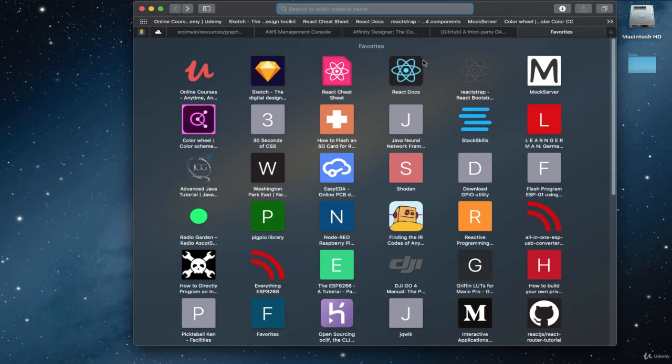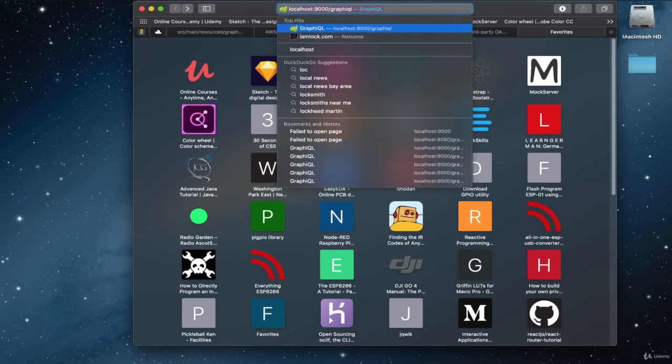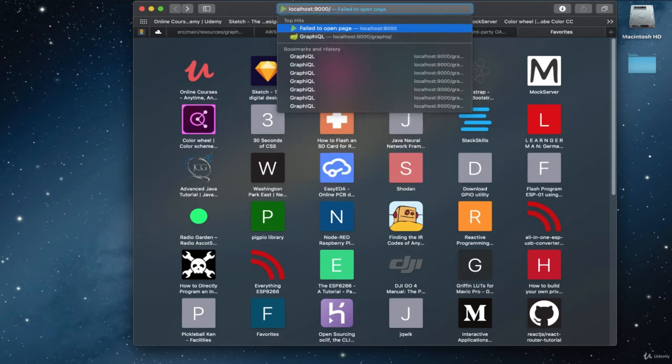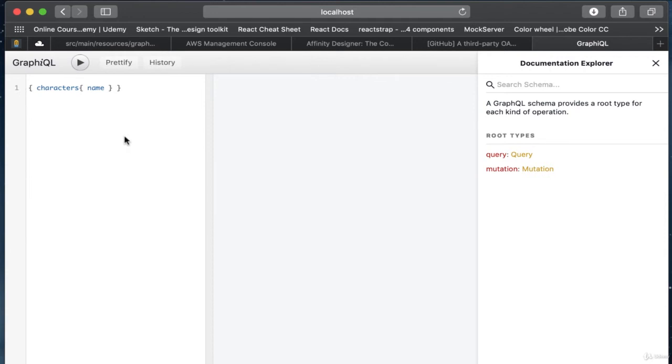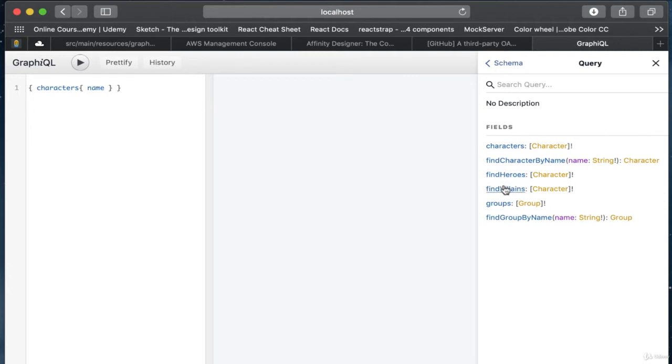I have a GraphQL server running on my local laptop here. And we can go to localhost slash 9000 and we go to slash graphical. That's where the graphical server is listening. And so this is the graphical tool and what you can see on the right hand side, it gives you documentation. It interrogates your GraphQL service as it's running. And in this case, you can see I have a query type for the queries and a mutation type for the mutations.